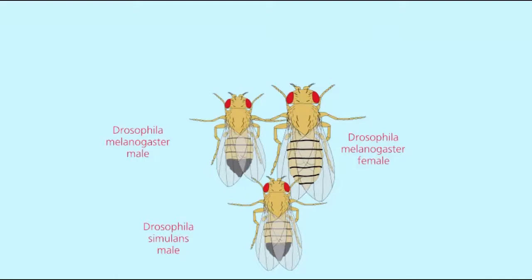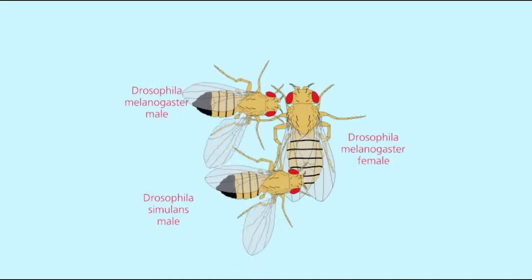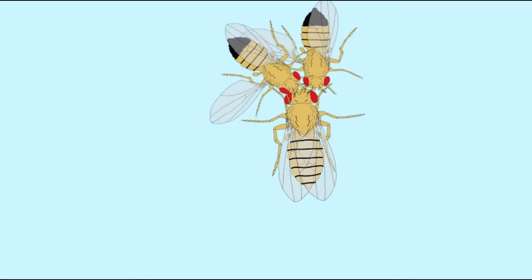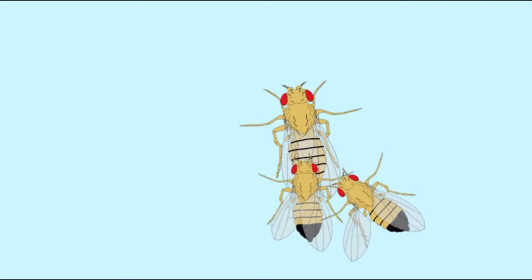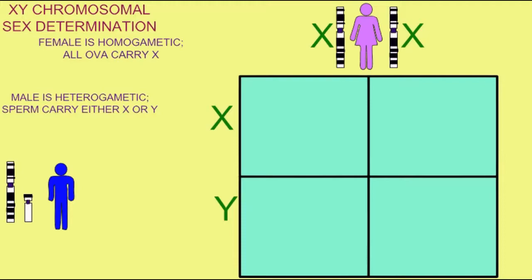In 1922, the British biologist J.B.S. Haldane hypothesized that in a scenario where two different species hybridized, and one of the two genders as a result in the hybrids was infertile, that the gender of the infertile individual was likely to be that of the heterogametic sex.